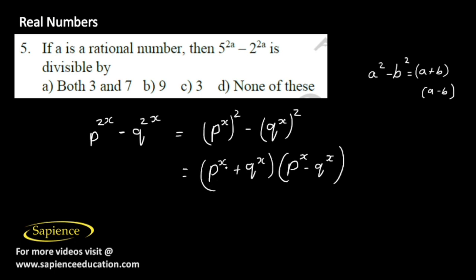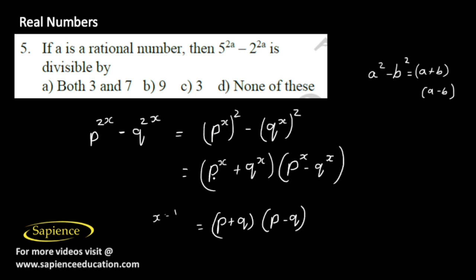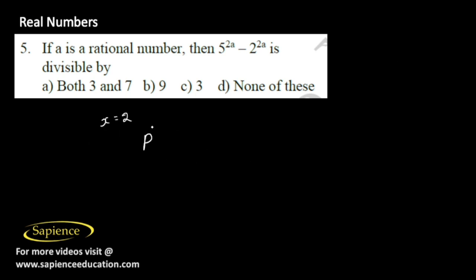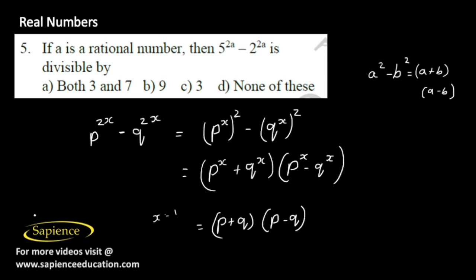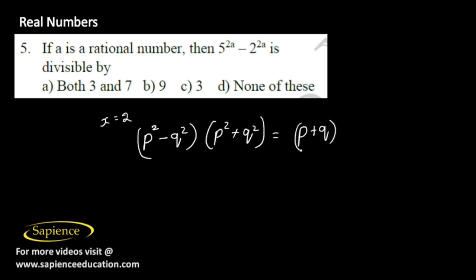Substituting x equals 1, we get (P plus Q) into (P minus Q). For x equals 2, we get (P squared minus Q squared) into (P squared plus Q squared), which expands to (P plus Q)(P minus Q)(P squared plus Q squared).